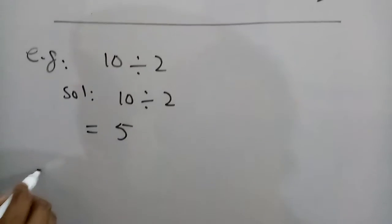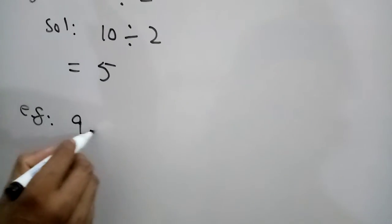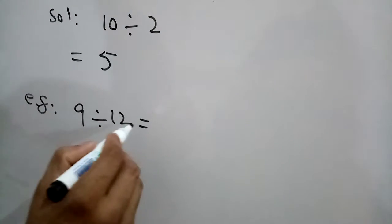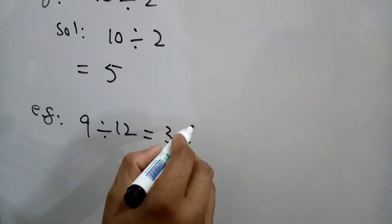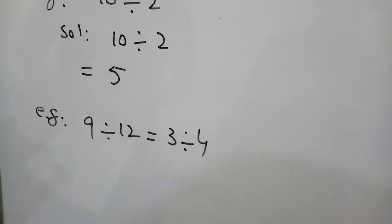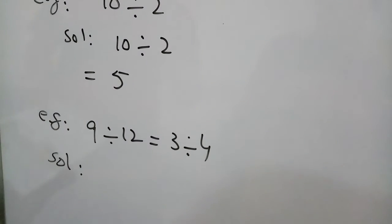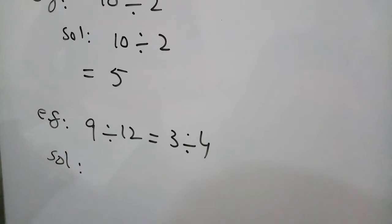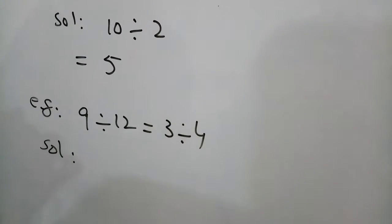Secondly, we are doing one more example. 9 divided by 12 is equal to 3 divided by 4. How can it happen? This example proves that when a natural number is divided by a natural number, the result is not a natural number.